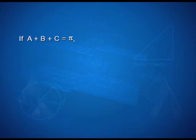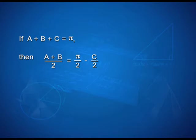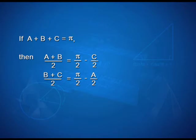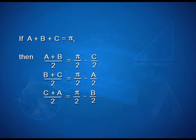Fourth, if A plus B plus C is equal to pi, then (A plus B) upon 2 is equal to pi upon 2 minus C upon 2, (B plus C) upon 2 is equal to pi upon 2 minus A upon 2, and similarly (C plus A) upon 2 is equal to pi upon 2 minus B upon 2.